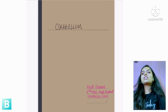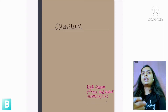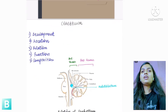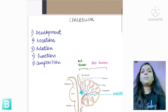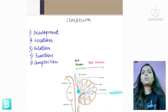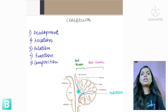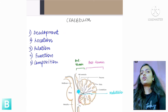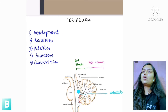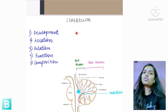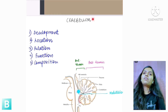Our discussion for Cerebellum today will be in bits and parts. Starting with development: Cerebellum develops from the metencephalon, which is the embryonic part, and the adult part corresponds to the hindbrain. The metencephalon gives rise to two structures — Cerebellum and Pons.